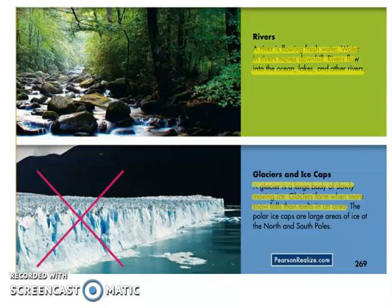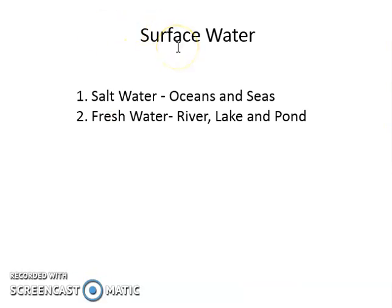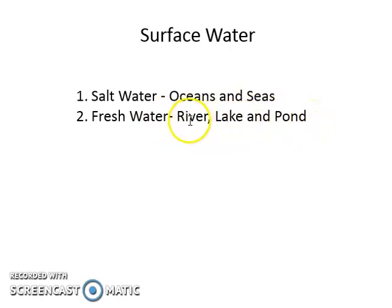Let's make a summary. Surface water examples include salt water — specifically oceans and seas — and fresh water, examples of which are rivers, lakes, and ponds. The difference is that rivers are running water, while lakes and ponds are still water. These three are fresh water, though some lakes and ponds have a content of salt, but there are only a few of those.